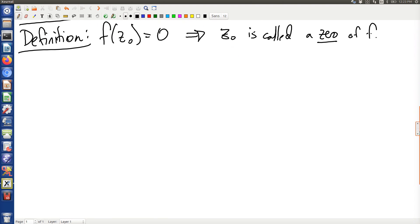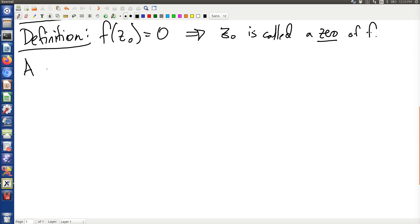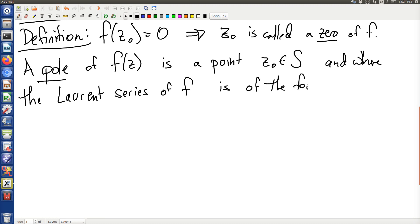A pole of f of z is a point z₀ in S, so it is a place where f is not analytic, and where the Laurent series of f is of the form... We're going to write a Laurent series centered at z₀. There's the Taylor series part. There's no problems there. That's perfectly analytic at z₀. The trouble happens here.